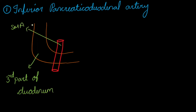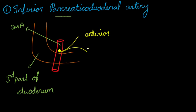Now we will discuss the first branch, the inferior pancreaticoduodenal artery. This artery arises from the superior mesenteric artery at the upper border of the third part of the duodenum. There it divides into two branches: one is the anterior branch and the other is the posterior branch.